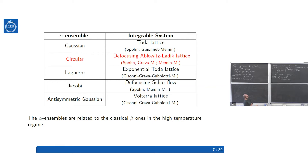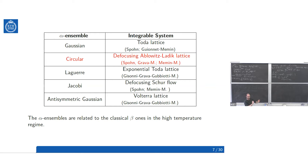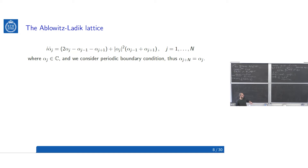Now let's look more carefully. What is the Ablowitz-Ladik lattice? It is this system of ODEs where the particles α_j are free to move over the complex plane in principle, and we consider periodic boundary conditions so α_{j+N} = α_j.